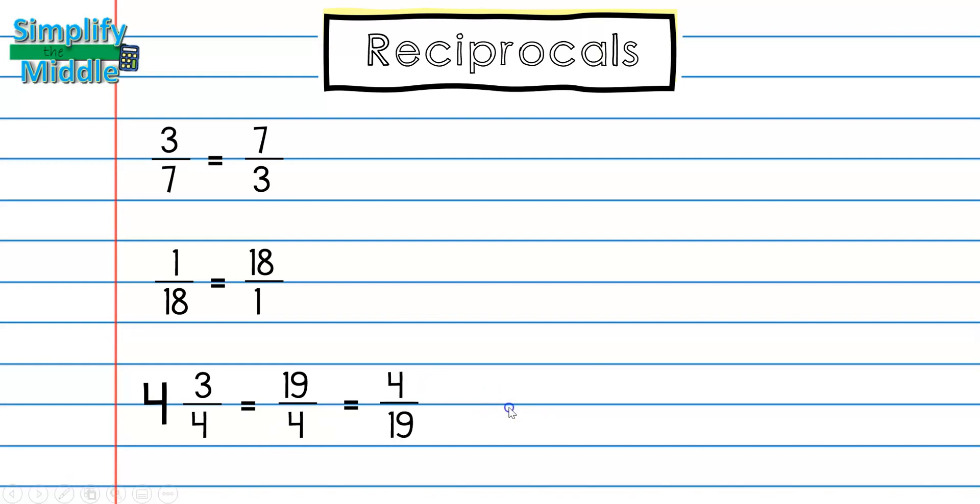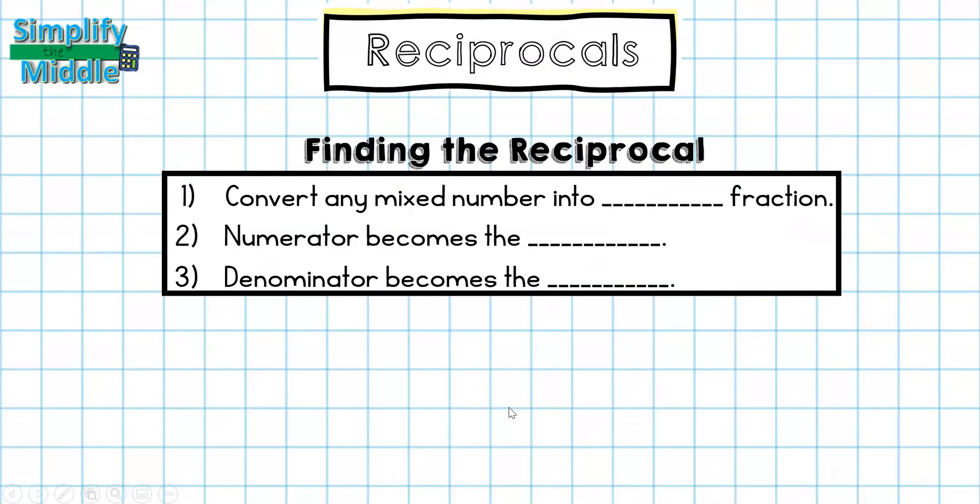Let's wrap up. When finding the reciprocal, you'll convert any mixed number into improper fractions. Numerator becomes the denominator, and the denominator becomes the numerator.